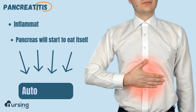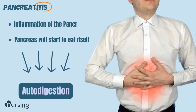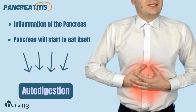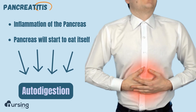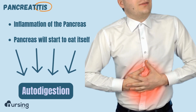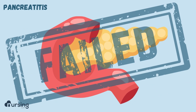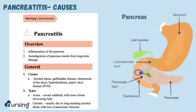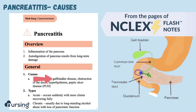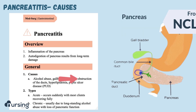Pancreatitis is inflammation of the pancreas — that's the 'itis' part. The pancreas will actually start to eat itself, or autodigest itself — autodigestion. Ultimately what happens is the pancreas begins to lose function. The two most common causes are chronic alcoholism and gallbladder disease, especially if these ducts become obstructed.